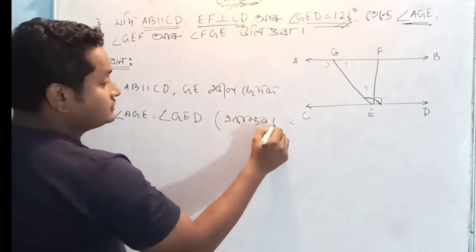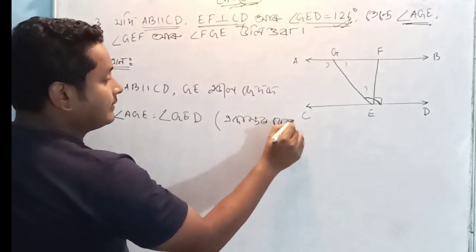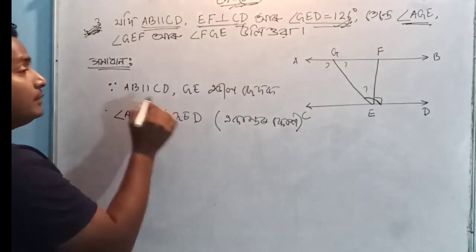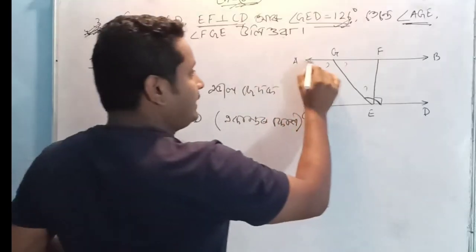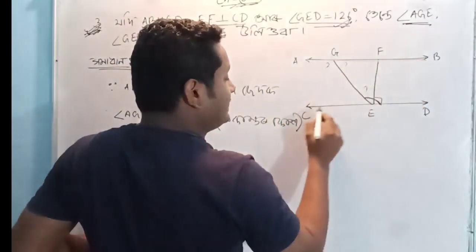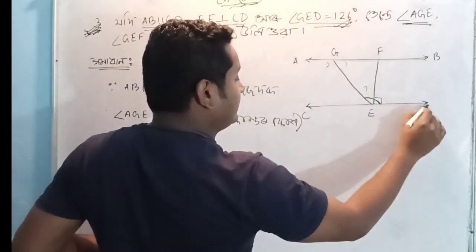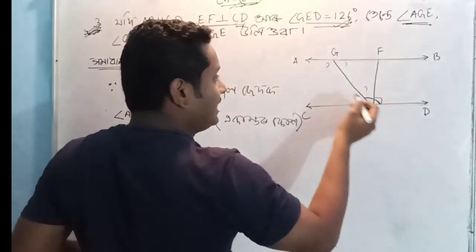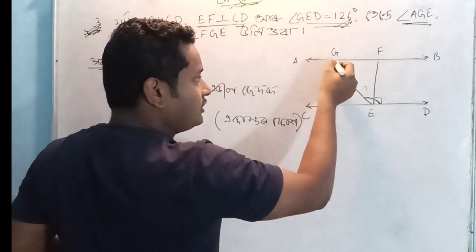I will write. So, AB is a common term, and CD is a common term.